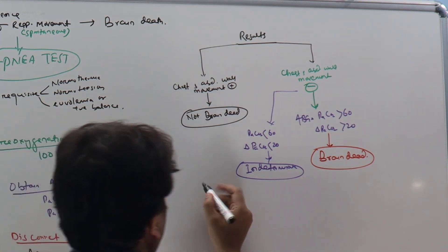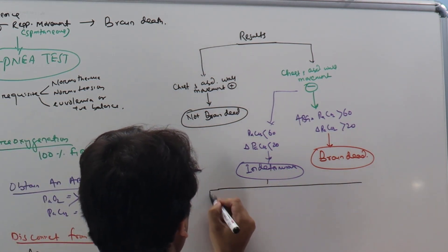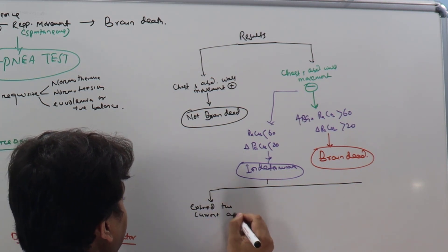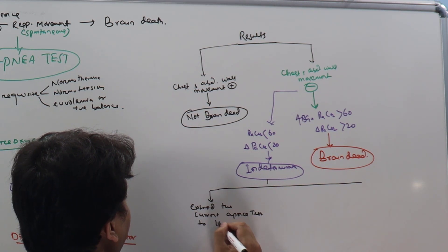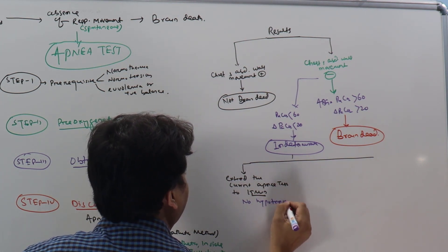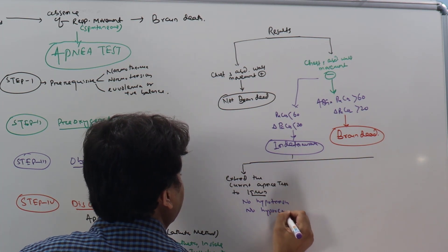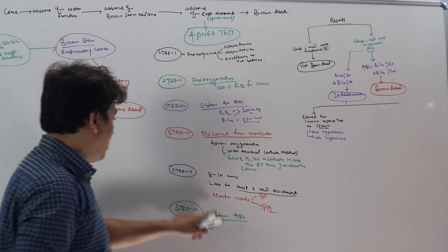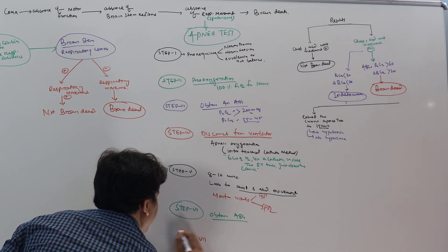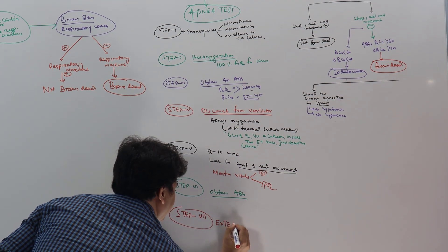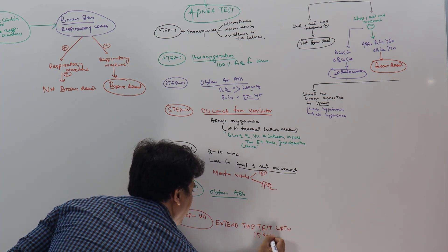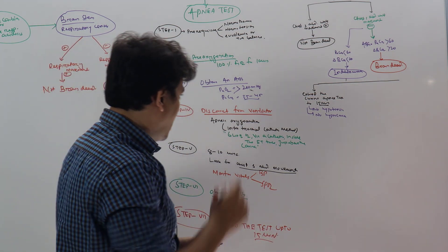This is indeterminate. What you can do in this case? We can do three things. Number one, we can extend the current apnea test to maximum of 15 minutes, provided there is no hypotension or no hypoxemia. If these two conditions are fulfilled, you can extend the test up to 15 minutes. Here you can add another step, it is called step 7: extend the test after 15 minutes, provided the vital signs are stable.